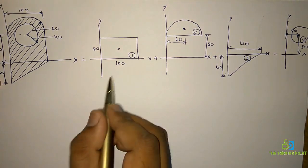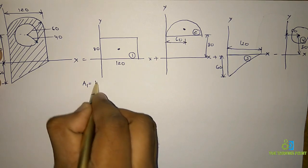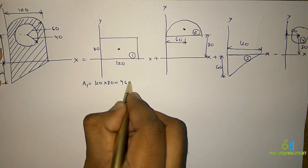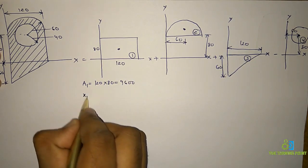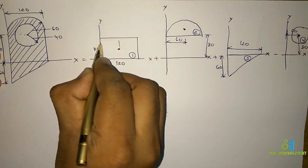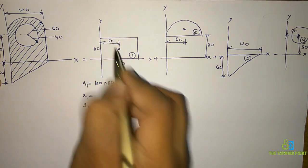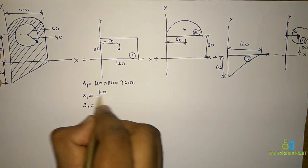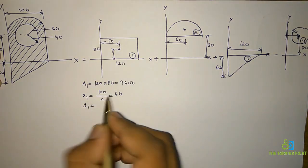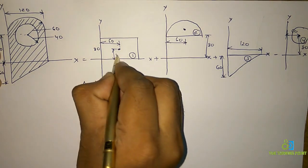First, let's find the area and centroidal coordinates of the first geometry. Area A1 equals base times height: 120 times 80 equals 9600. For x1 and y1, these are the perpendicular distances. For a rectangle, x1 is base divided by 2, so 120 divided by 2 equals 60. Similarly, y1 is height divided by 2, 80 divided by 2 equals 40.